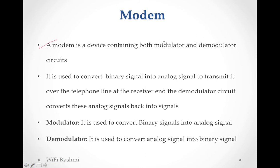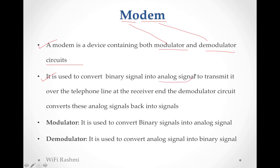Modem is a device combining both modulator and demodulator circuits. If you look at the name, 'Mo' stands for modulator and 'dem' stands for demodulator. So modem is a combination of modulator and demodulator, and it is used to convert binary into analog signal to transmit data. When our data is transferred through telephone lines, it should be analog. That's why we use a modem. The data in a computer is binary, so we need binary to analog and analog to binary conversion.